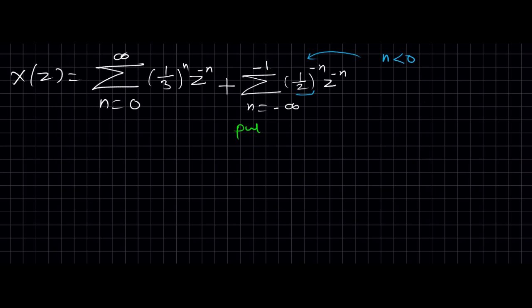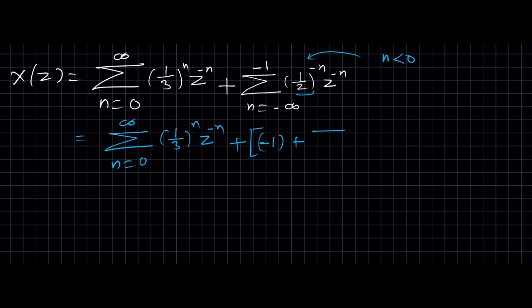We will remove the minus 1 limit by adding minus 1 to the sequence. Rewriting: the first part remains 0 to infinity of (1/3)^n times z^(−n). For the second part, by substitution, the sequence becomes n equal to minus infinity to 0. The sequence is still left-sided, going to the left of 0. It is (1/2) raised to minus n times z raised to minus n. We have to shift this signal to the right side by substituting and changing the limit to make it 0 to plus infinity.